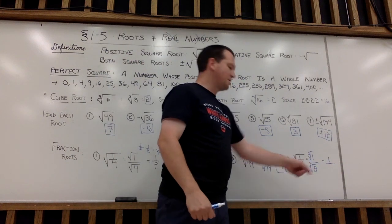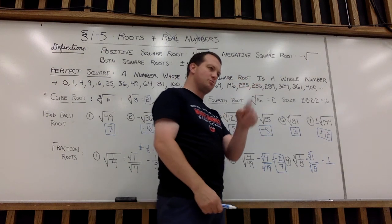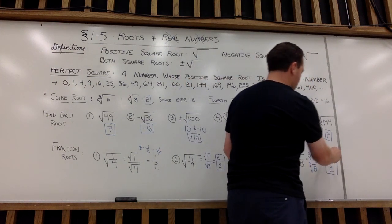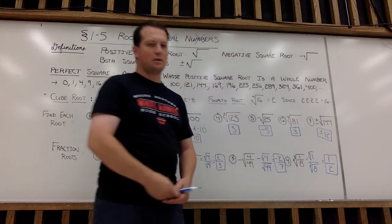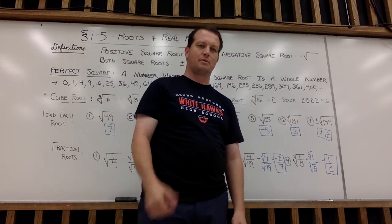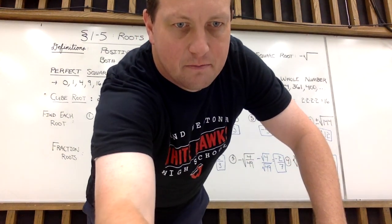All right. Cube root of 8. What number times itself 3 times is 8? You got a 2. 2 times 2 times 2. So 1/2 is the cubed root of 1/8. Because 1/2 times 1/2 times 1/2 is 1/8. Thanks again. Time to rock and fire with that assignment. Thank you.